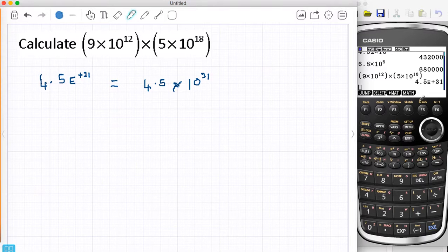Now I want to think about, if we didn't have a calculator, how could we do it? Well, I'm going to rewrite this equation as 9 times 5, so that times that, times 10 to the 12, times 10 to the 18. So I can do 9 times 5, which is 45.